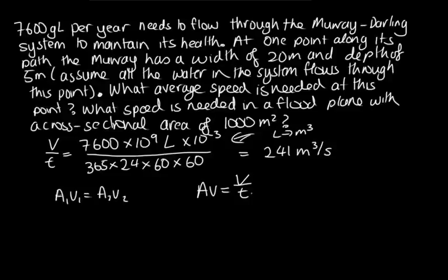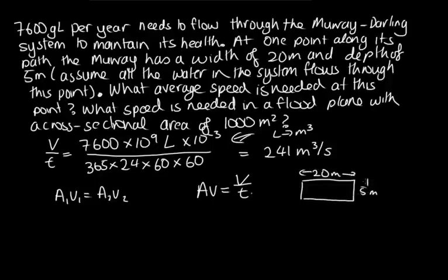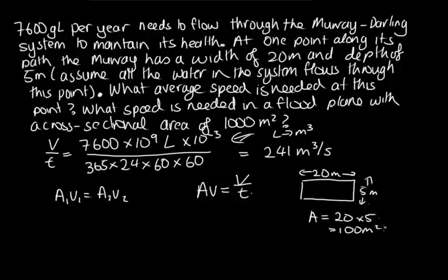We know that at this point, it's got a width of 20 metres and a depth of 5 metres. So the cross-sectional area A is equal to 20 times 5, which equals 100 metres squared.